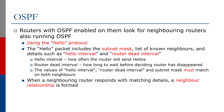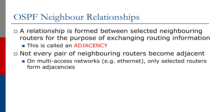When a neighboring router responds with matching details, a neighbor relationship is formed. A relationship is formed between selected neighboring routers for the purpose of exchanging routing information — this is what we call an adjacency. Not every pair of neighboring routers become adjacent. On multi-access networks, for example Ethernet, only selected routers will form adjacencies.